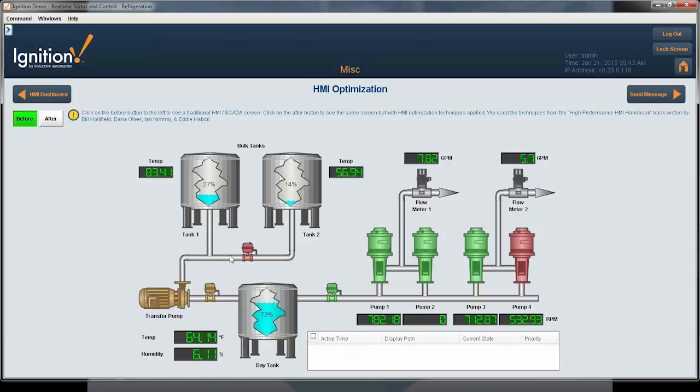But what's going on here is the use of colors. The operator has to be trained in what those colors represent and also the operator has to be trained on what the actual ranges are for these different process values, like the temperatures, the gallons per minute on the flow meter and various things like that.